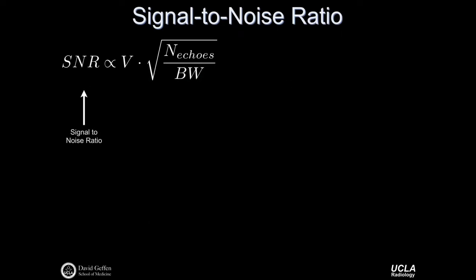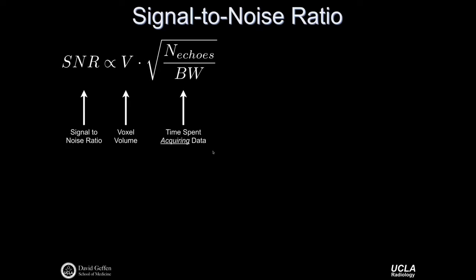The signal-to-noise ratio is also directly related to acquisition parameters we control. The SNR is proportional to the voxel volume — the volume of tissue contained in a pixel. Larger voxel volumes give more signal-to-noise, but also lower spatial resolution. The second part of this expression relates to the time spent acquiring data: the square root of the number of echoes is proportional to SNR. To double your signal-to-noise, you would have to acquire four times as many echoes, which can be quite costly in terms of time.